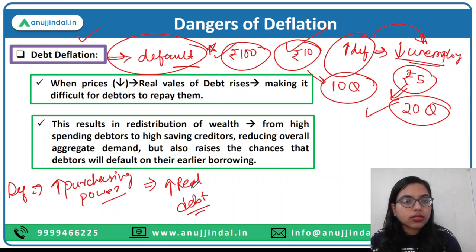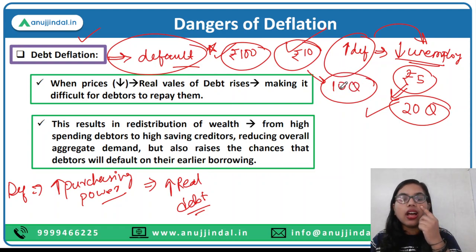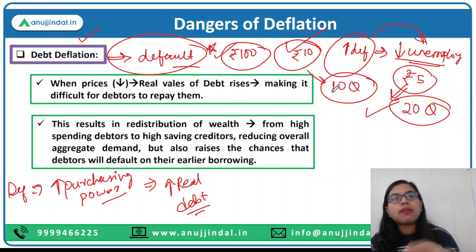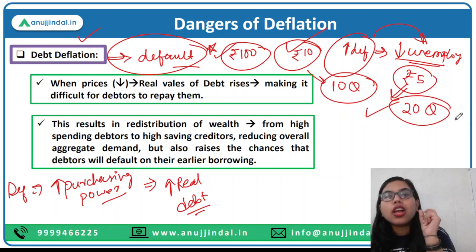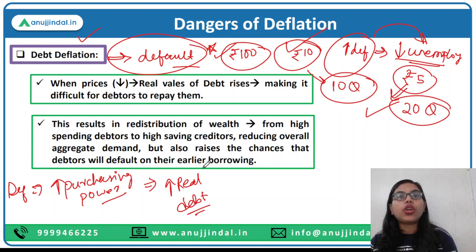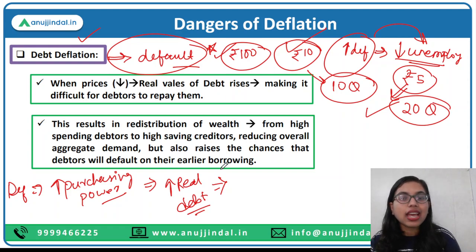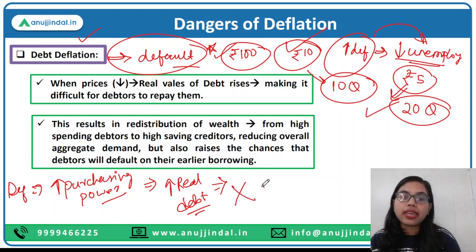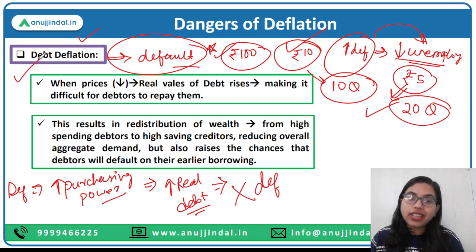That means you are in a loss — you took a loan equivalent to 10 packets' worth, but when you repay, you are repaying for 20 packets of Maggi. The real value of the debt has increased. This makes it very difficult for the debtor to repay, they are less incentivized to make the payment, and therefore they default on making the payment. So because of deflation, there is a problem of debt deflation.